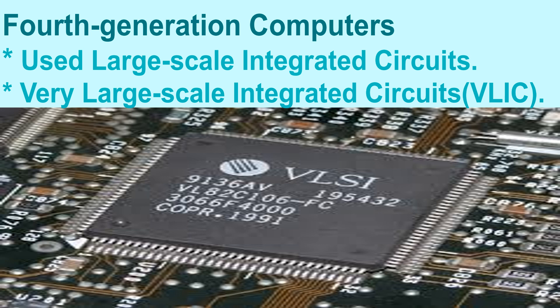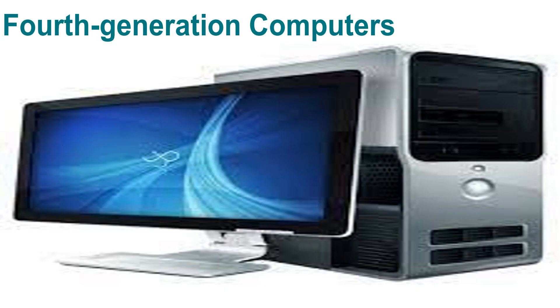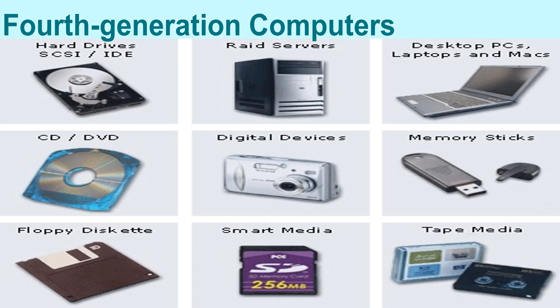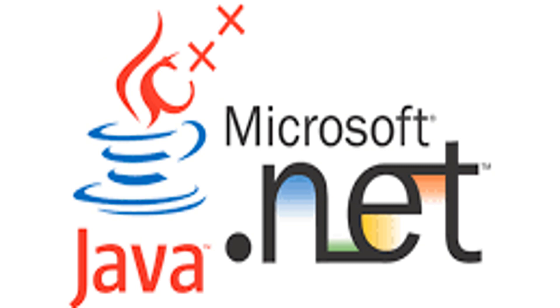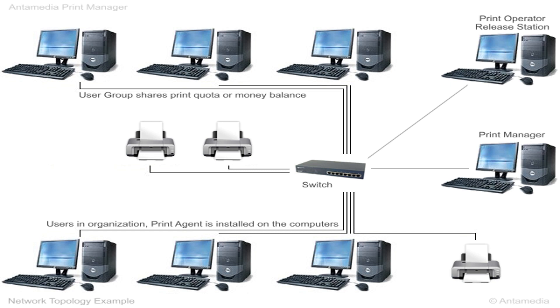Now let's discuss about the fourth generation computers. Fourth generation computers are those that we use today. They used large scale integrated circuits and very large scale integrated circuits. These computers have much greater computing power and extremely large memories than earlier computers. Many new storage devices were developed with much higher storage capacity and less cost. Many new high level languages such as C, C++, C#, and Java are used for programming. Computers can also be linked together or networked to share memory space, software, and information, and communicate with each other.